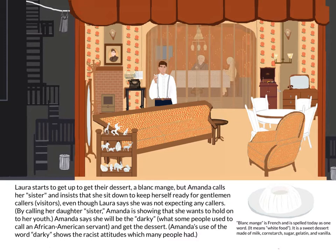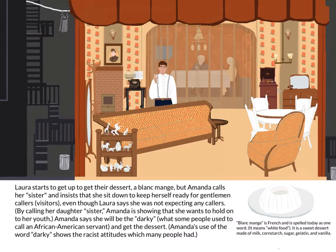Blancmange is French and means 'white food' — it is a sweet dessert made of milk, cornstarch, sugar, gelatin, and vanilla. After getting the blancmange and putting it on the table, Amanda begins to tell a story about a Sunday afternoon long ago when she had entertained 17 gentleman callers in her home in Blue Mountain, Mississippi. Tom stands to the side while he smokes. He doesn't want to listen, but kind Laura asks him to listen again to the story he has heard many times before, pretending he doesn't remember it.